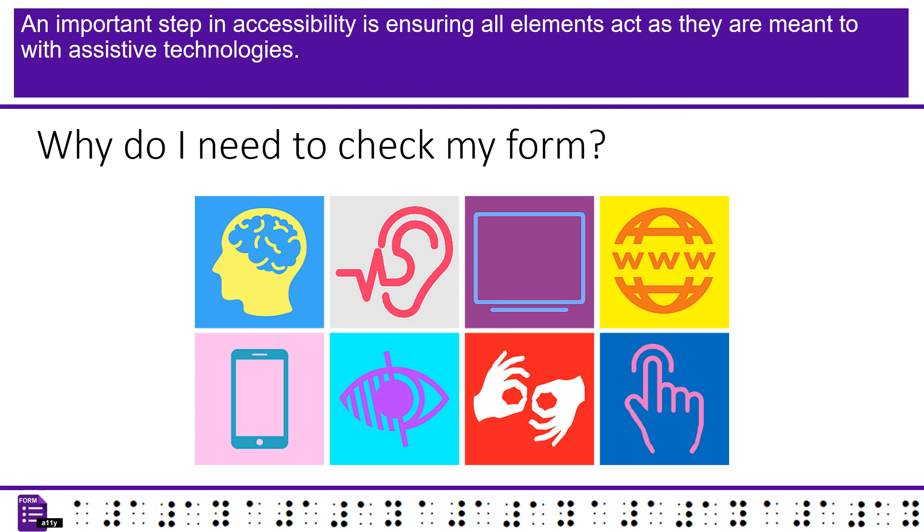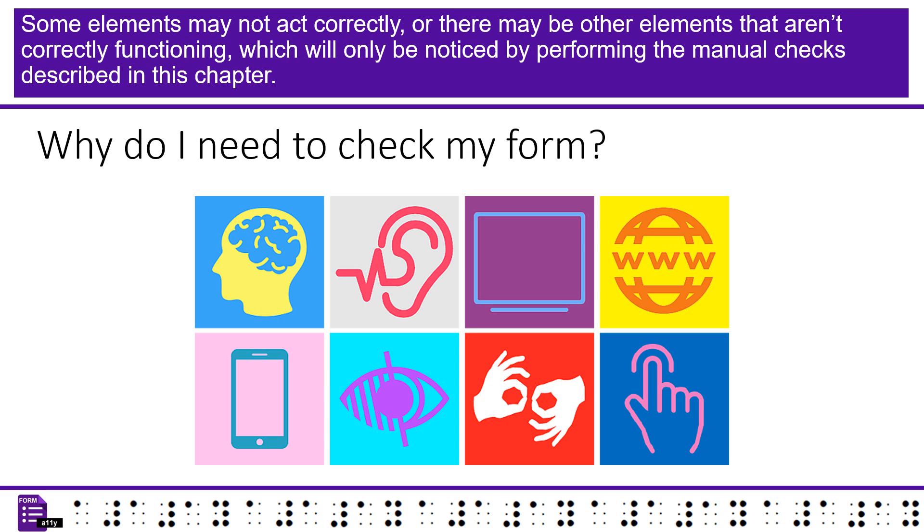An important step in accessibility is ensuring all elements act as they are meant to with assistive technologies. Some elements may not act correctly, or there may be other elements that aren't correctly functioning, which will only be noticed by performing the manual checks described in this chapter.